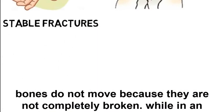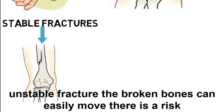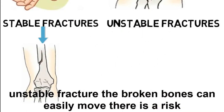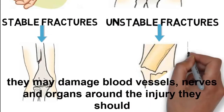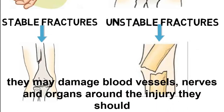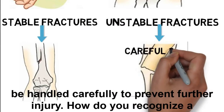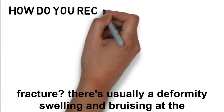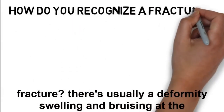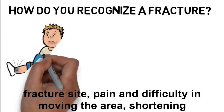A fracture can also be stable or unstable. In a stable fracture, the broken bones do not move because they are not completely broken. In an unstable fracture, the broken bones can easily move, posing a risk of damage to blood vessels, nerves, and organs around the injury. They should be handled carefully to prevent further injury.